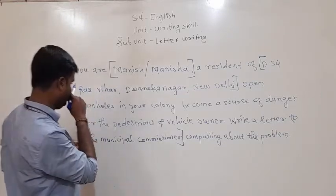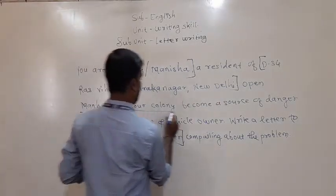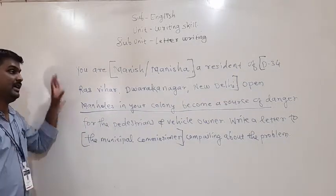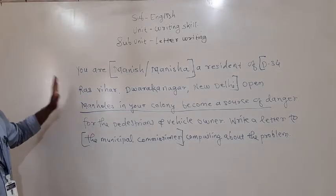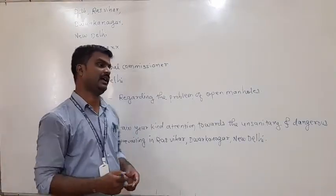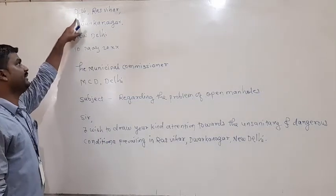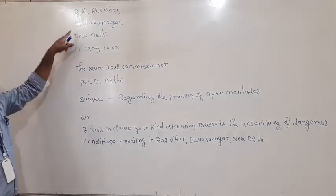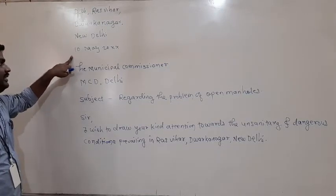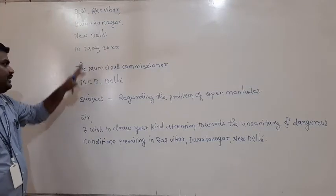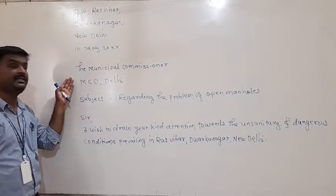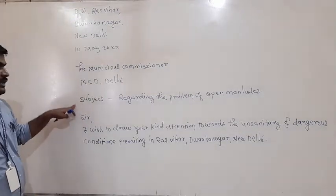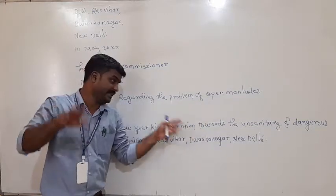Next, for the subject: 'Regarding the problem of open manholes' — you mention the problem in the subject line. Then after this, you mention the salutation. Remember to leave one blank line between each section as you write. After the salutation, you begin your body with an opening sentence like: 'I wish to draw your kind attention towards the unsanitary and dangerous conditions prevailing in Raskalihar, Dwarka, New Delhi.'